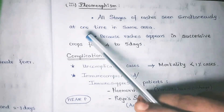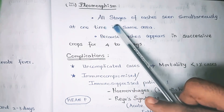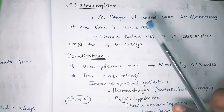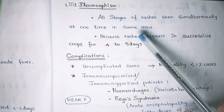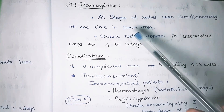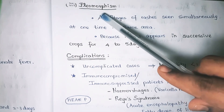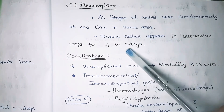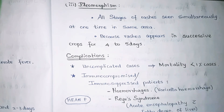Pleomorphism is a specific and important feature of chickenpox. All stages of the rash — macules, papules, vesicles, and scabs — can be seen at the same time in the same area. This is because rashes progress while new rashes also appear in the same area. Rashes appear in successive crops for four to five days, which explains the simultaneous appearance of all stages.